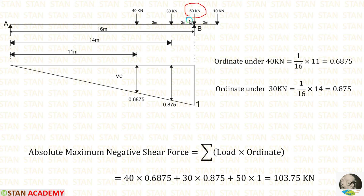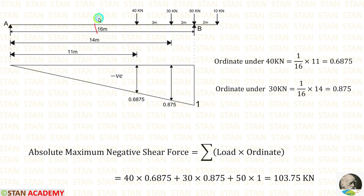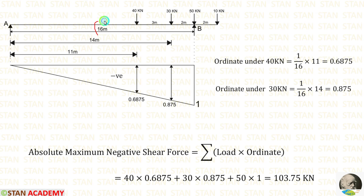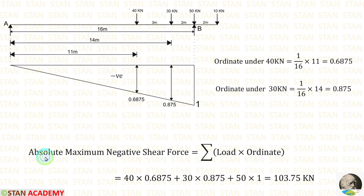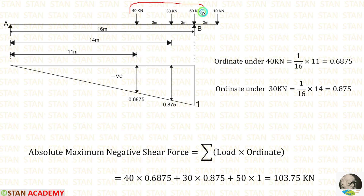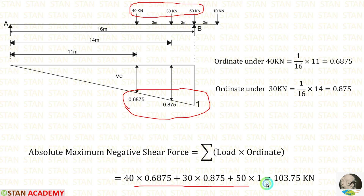The 50 kN point load is kept at point B. Now let us calculate the ordinates for the 40 kN and 30 kN loads. For 16 meter it is 1, but for 14 meter we get 0.875. For 16 meter it is 1, but for 11 meter we get 0.6875. Now we calculate the absolute maximum negative shear force by multiplying these 3 loads with the ordinates and adding them. Finally we get 103.75 kN.